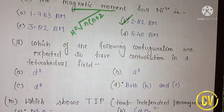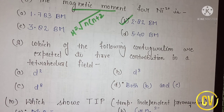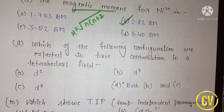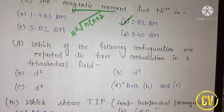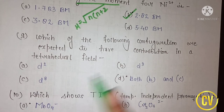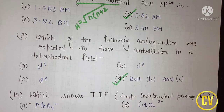The next question asks which of the following configurations are expected to have orbital contribution in the tetrahedral field. You need to know that both options B and C are correct, so the correct answer is option D, which says both B and C.